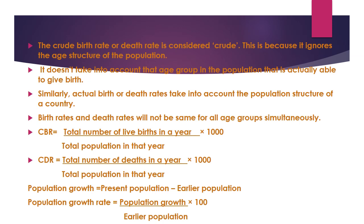Actual birth and death rates take into account the population structure of a country. Birth rates and death rates are not the same for all age groups simultaneously — older people die more frequently, while younger people are less likely to die soon. So birth rate and death rate are different for different age groups.